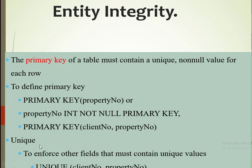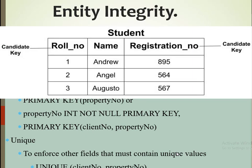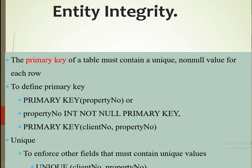There are instances where you may have what are referred to as candidate keys, which you require should also contain unique values. For instance, in a students table, there could equally be an email or a national ID number, which we expect to be unique for each and every student. You can enforce this through the use of UNIQUE at the bottom, specifying the fields that you also want to be unique.